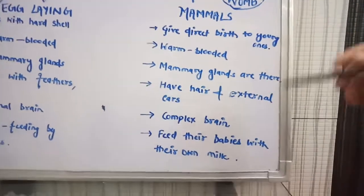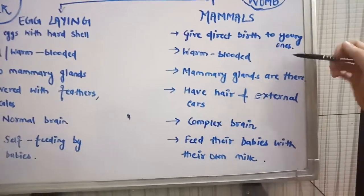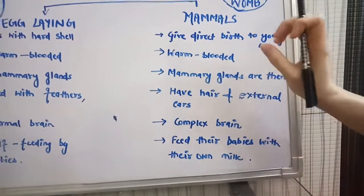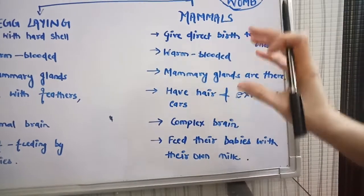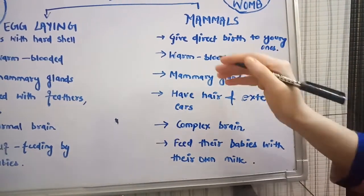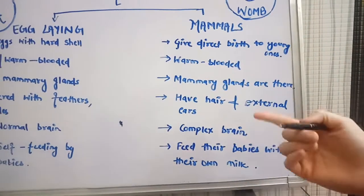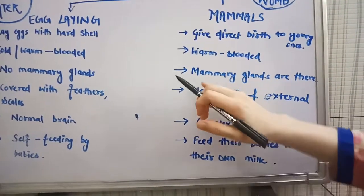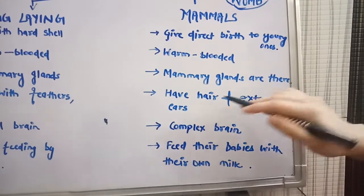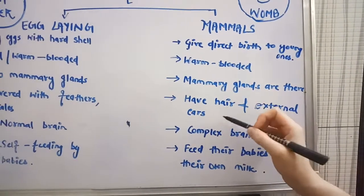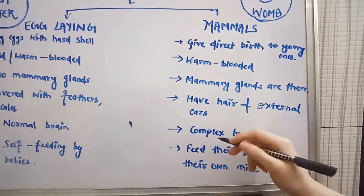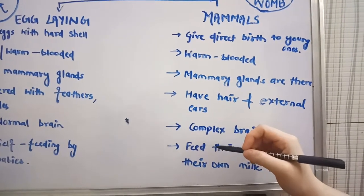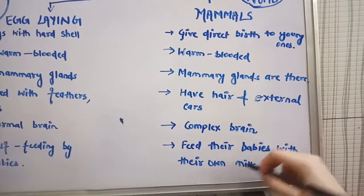Now, coming to the mammal section: mammals give direct birth to their young ones. All mammals are warm-blooded, and this warmth helps them survive in all kinds of temperatures and circumstances. They have mammary glands and milk is produced by mammary glands. They have hair and external ears, and they have complex brains, so they can take care of, feed, and travel with their babies.